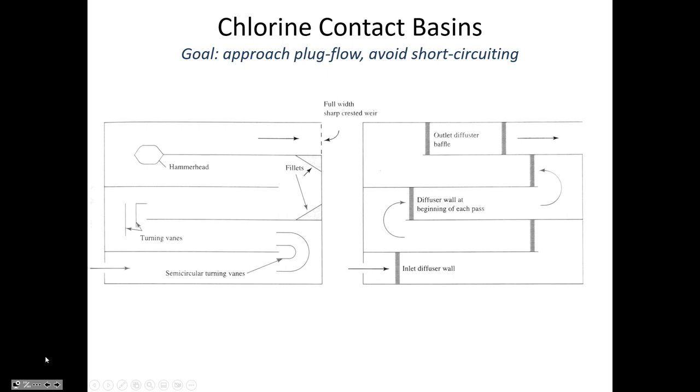You probably remember from environmental engineering different types of reactors. Continuously stirred tank reactors, which are sometimes called completely mixed flow reactors, is at one extreme where water is immediately dispersed and continually mixed. At the other end of the spectrum is a plug flow reactor, where there's no mixing of the particles as it travels through the reactor. Typically plug flow reactors are long and skinny to achieve that and limit the amount of dispersal.